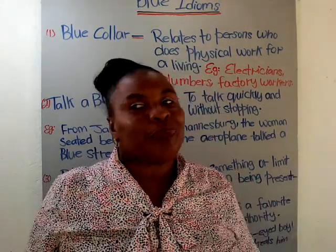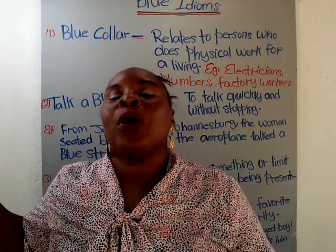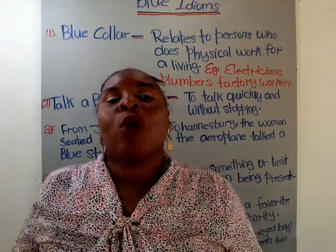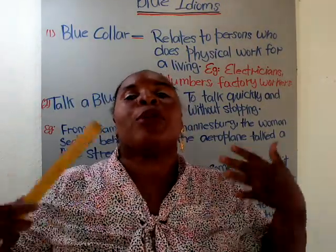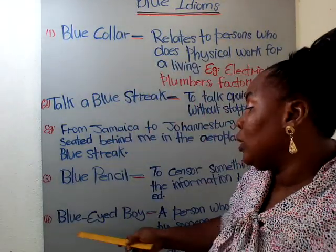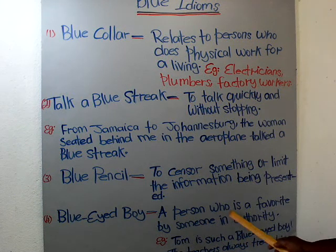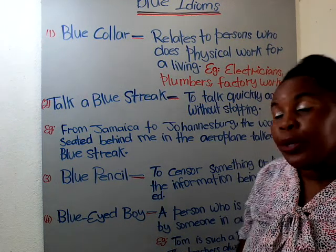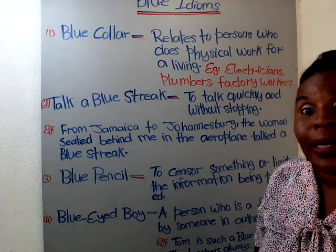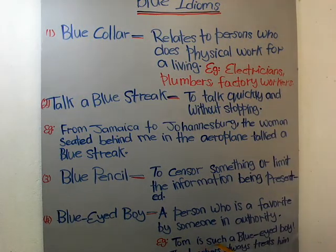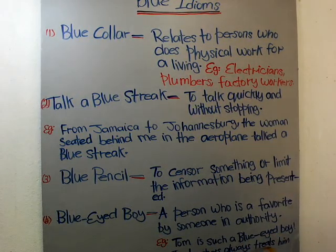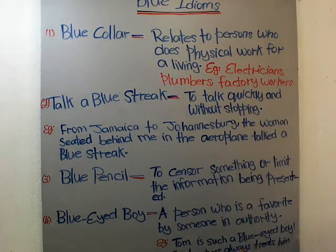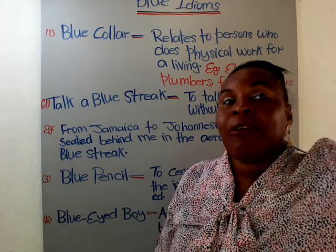The president favors the governor of New Jersey — every time he calls upon him, or uses him as an example for what he's trying to bring forward to the nation. Here is an example: 'Tom is such a blue-eyed boy — the teachers always treat him special.'